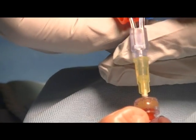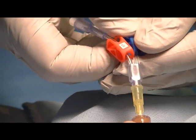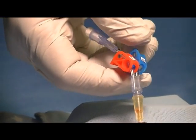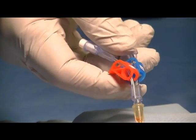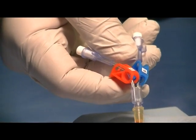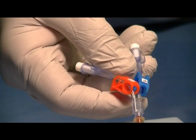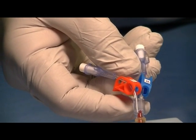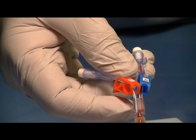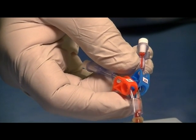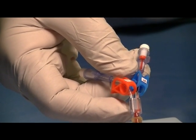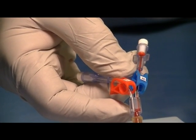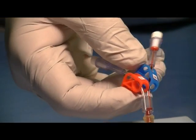At that point, release the blue clamp and allow the blood to flow from the catheter up into the waste plug until it hits the white vent plug.